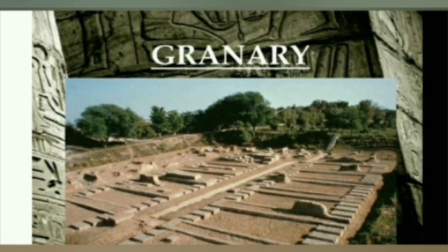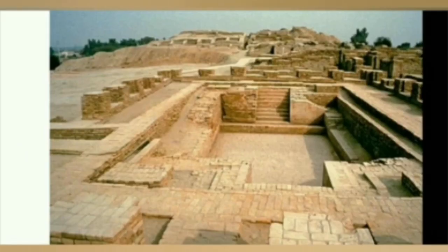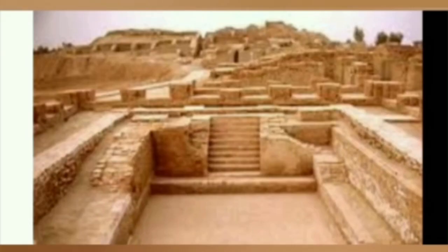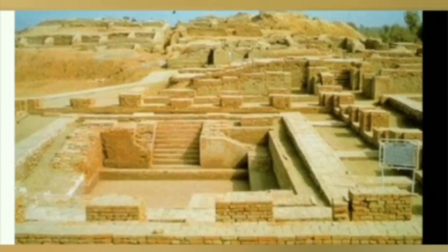The city dwellers depended upon these granaries for their food requirements, especially during famine days. The largest granary has been found at Mohenjo-daro. Another important building at Mohenjo-daro was a huge public structure commonly referred to as the Great Bath. It is a rectangular structure and resembles a swimming pool. It is made of baked bricks, and there were steps leading to the bottom of the pool from two sides.